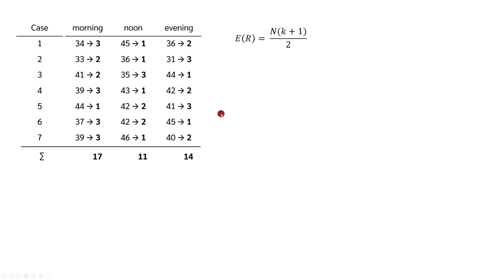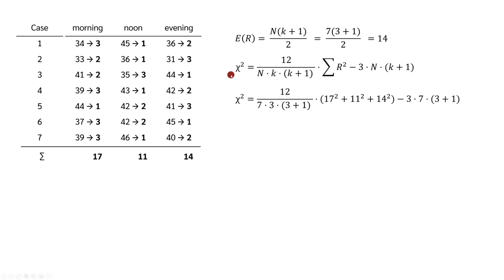If there were no differences between time points in reaction time, we would expect the same rank sum at all time points. The expected value is obtained with a formula — in this case it is 14. So if there is no difference between morning, noon, and evening, we would expect a rank sum of 14 at all three time points. Next, we calculate the chi-square value using the formula: n is the number of people (7), k is the number of time points (3), and the sum of r-squared is 17² + 11² + 14². This gives a chi-square value of 2.57. The degrees of freedom equal the number of time points minus 1, so 2.